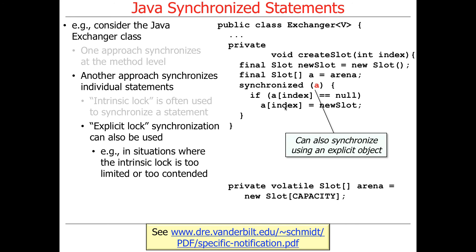In cases where the intrinsic lock is too limited or too contended, we can synchronize on individual objects. This is similar to what's happening in the fair semaphore implementation, where you synchronize on individual wait objects or wait locks — not for the same reason, but in general you can synchronize on things other than 'this'. That was the key point.